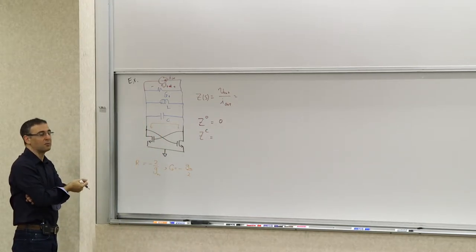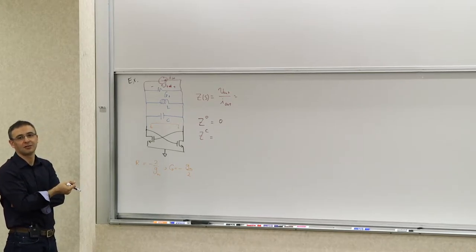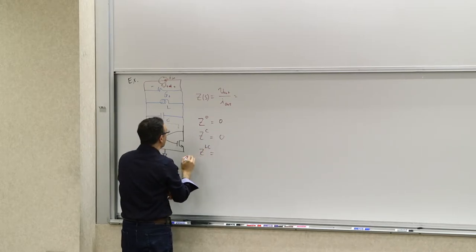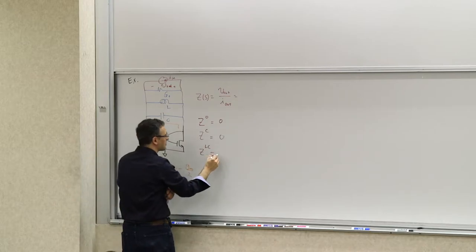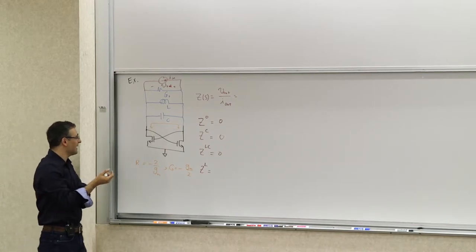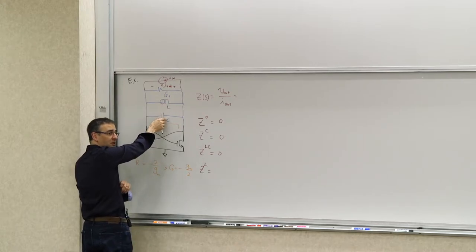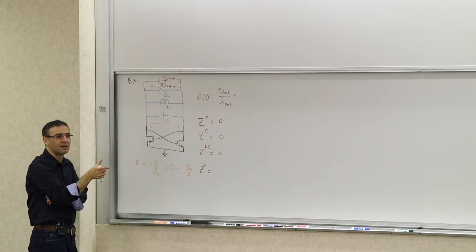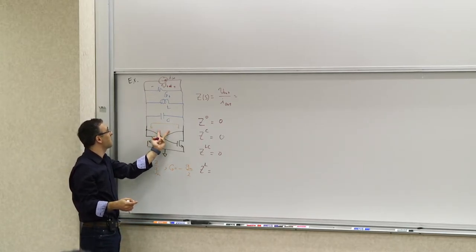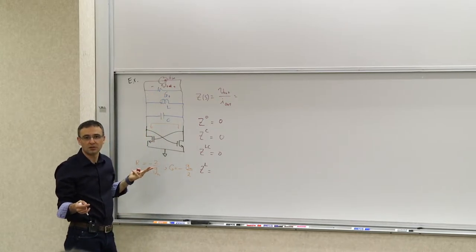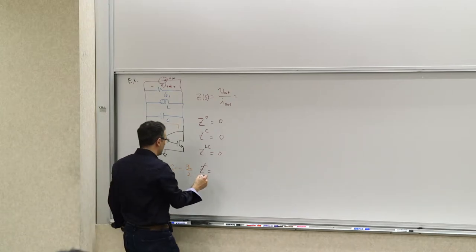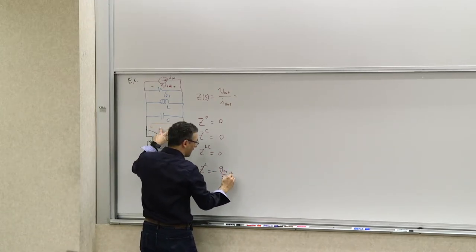Z_CL is also zero because L is open but C is still shorted. So the only non-zero transfer constant is Z_L. In the case of Z_L, L is infinite value (open circuit) and C is zero value (also open circuit). So both are open, and you see the differential impedance: the cross-coupled pair conductance negative gm over 2 in parallel with the loss conductance g_0. Two conductances in parallel add, so it's negative gm over 2 plus g_0, and Z_L is 1 over that quantity.